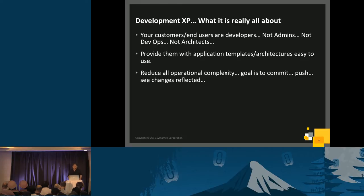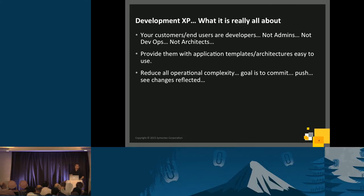This reduces operational complexity — it should be transparent for all developers. Just commit the new change, push it, and see changes reflected. You can have multiple environments on PaaS — one repository for development, one for test, one for production. When the developer commits, the PaaS pulls down the new code, merges it, creates the new Docker image, and pushes it to the appropriate environment according to the application specifications.